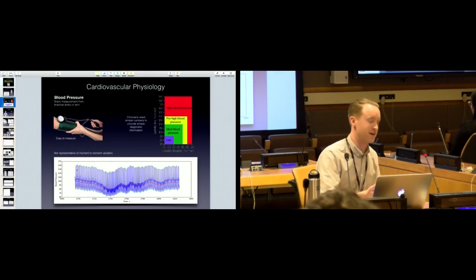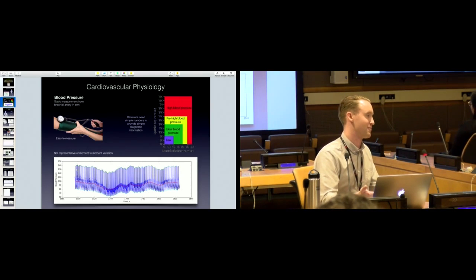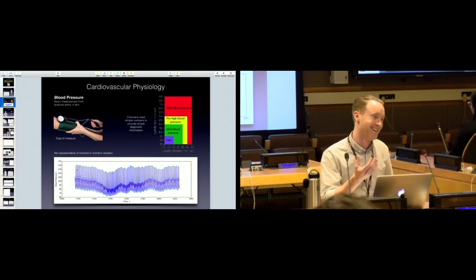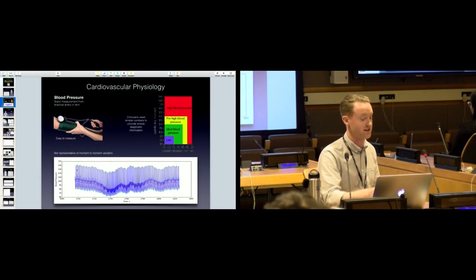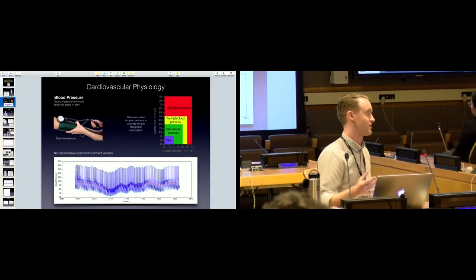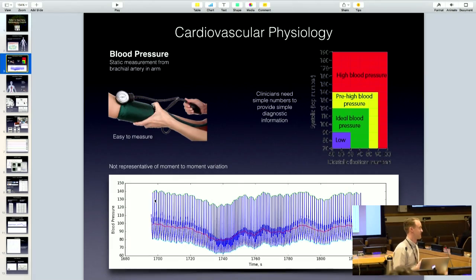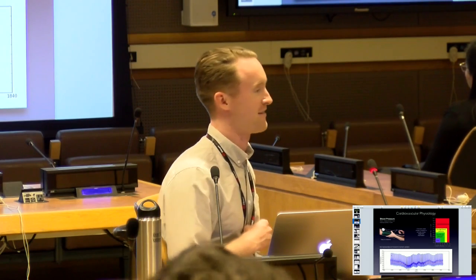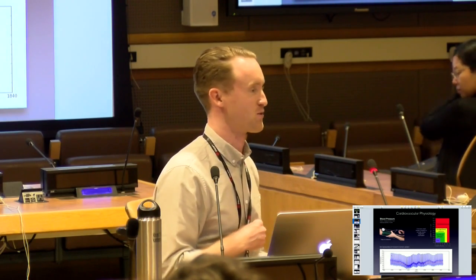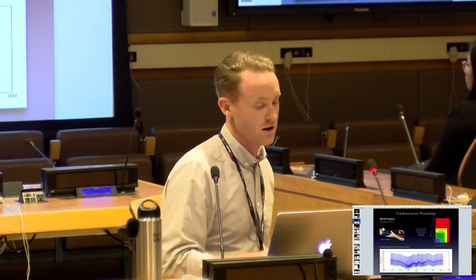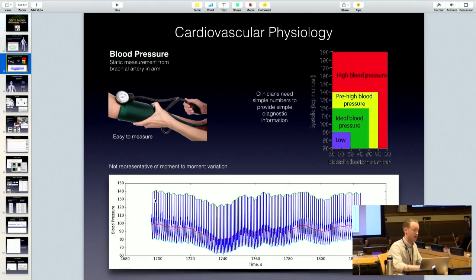If you look at this bottom graph here, this is a real blood pressure trace from our lab - we did inject drugs to make blood pressure drop and rise pretty quickly. If you were to measure this person's blood pressure at 1700 seconds versus 1740 seconds, that's quite a discrepancy. I went and got my blood pressure checked for a physical, I had already slammed three cups of coffee and run there from the train, and my blood pressure was through the roof.